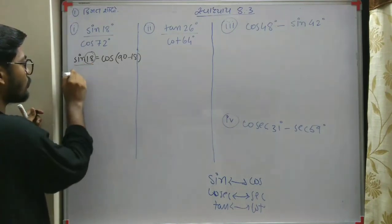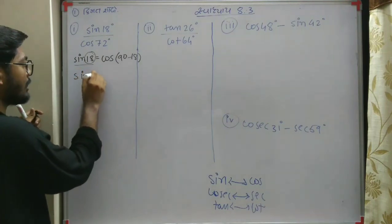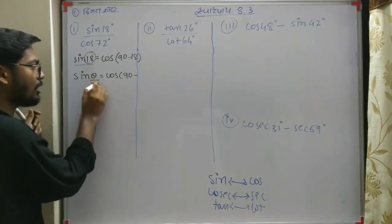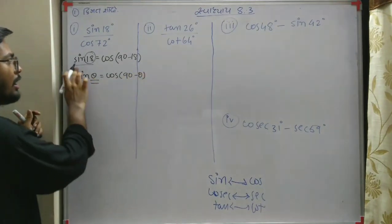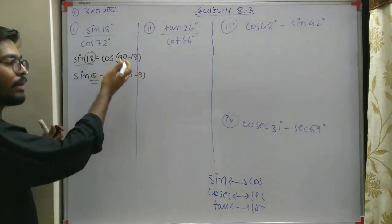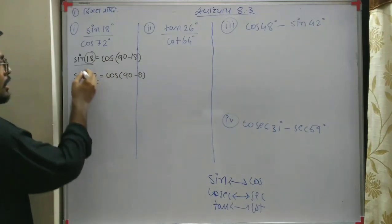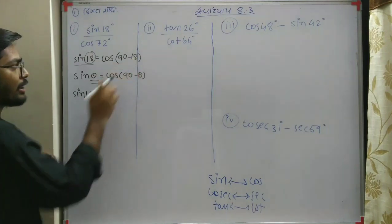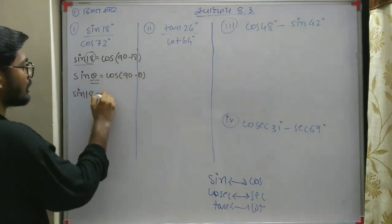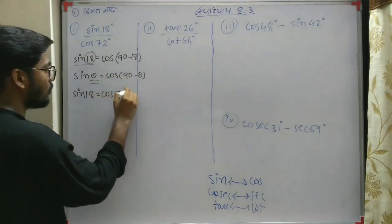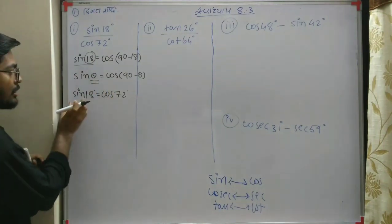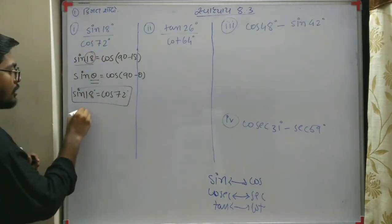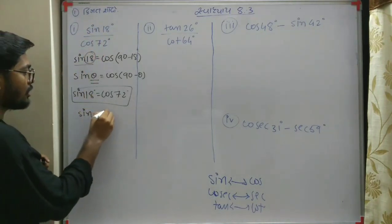Theta. Which is the basic formula: sin theta is equal to cos. So 9 minus theta is equal to cos 9 minus — I will turn the sign and then do the second step. Don't forget the sign — then next we get to sign.